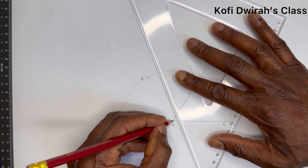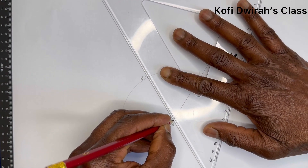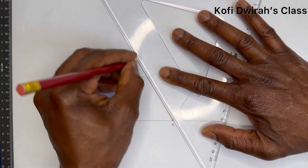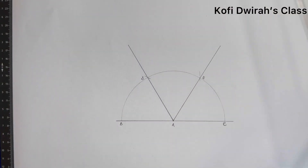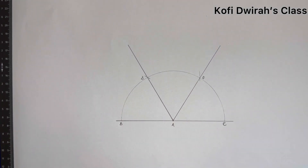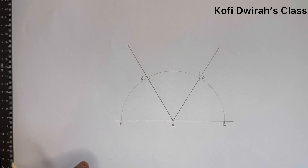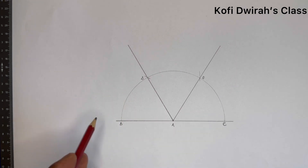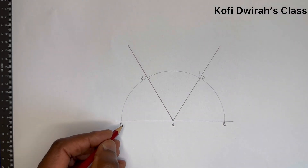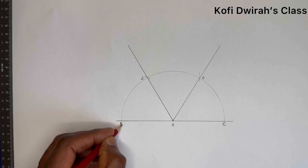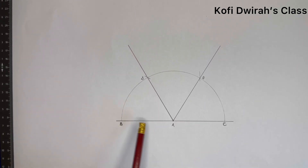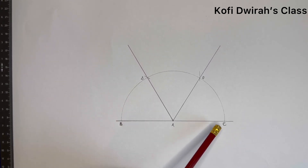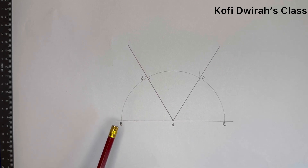Now we have our construction complete. We know that a straight line is 180 degrees, so line BC is 180 degrees.